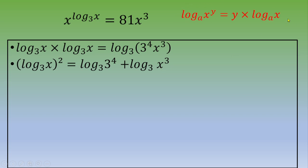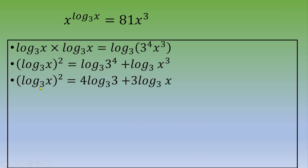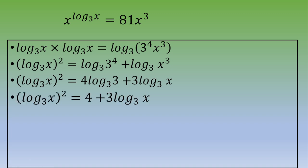Once again, we use the same formula with the power and we end up with log base 3 of X squared equals 4 log base 3 of 3 plus 3 log base 3 of X. Log base 3 of 3 is 1, so we end up with log base 3 of X squared equals 4 plus 3 log base 3 of X.